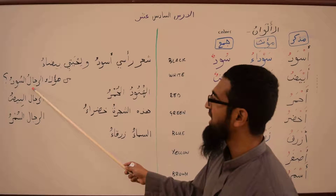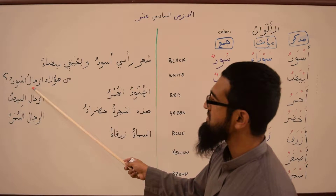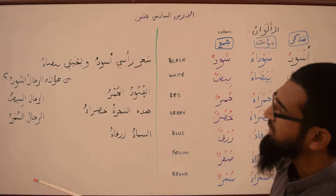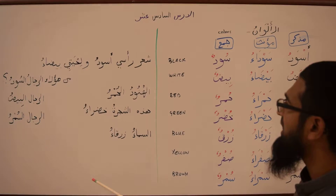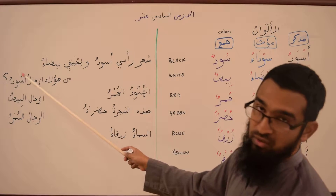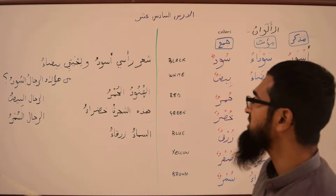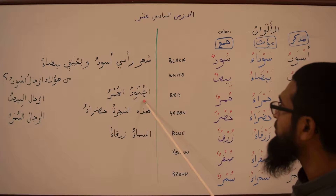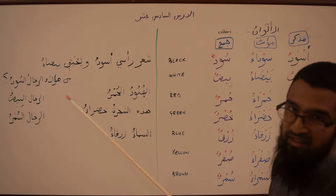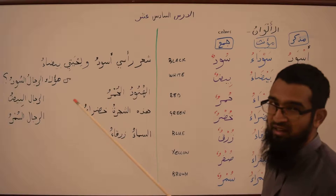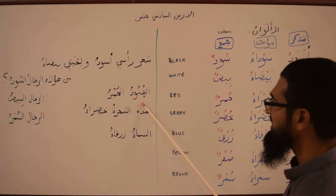Man ha'ulai arrijal al-sood — who are these black men? So this is one way you use the word sood. Since it's jam', you cannot use aswad, nor can you use sawda, so you use the jam' sood. Alhanood ul-humer — Al-hunood is the jam' of Hindi, meaning Indians. Humer is red — Red Indians.